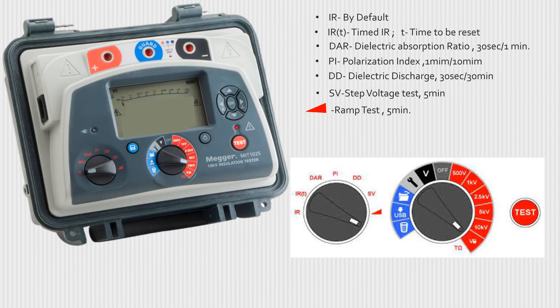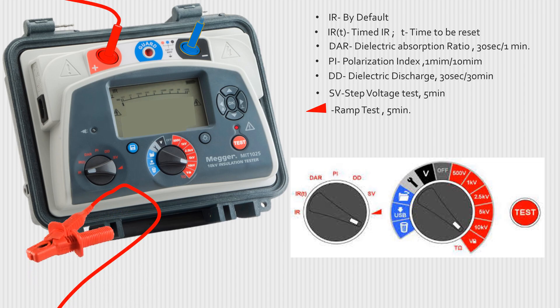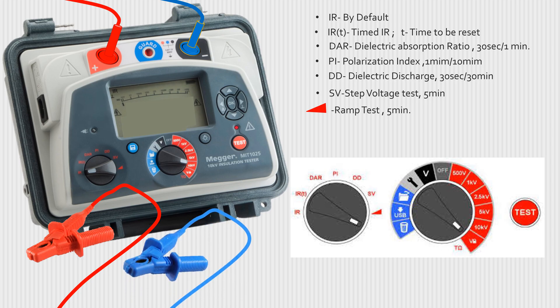This is a picture of a digital megger. The red lead is to be connected at the positive indicated port and the blue lead at the negative indicated port. A guard connection may or may not be used. The red clamp and blue clamp are to be connected at two points between an insulation whose insulation resistance is to be measured.